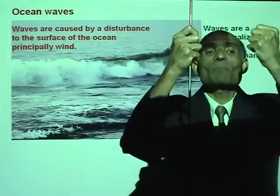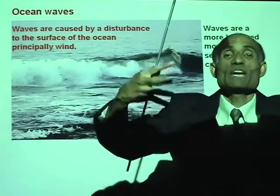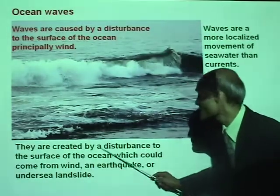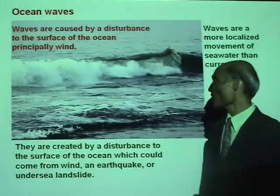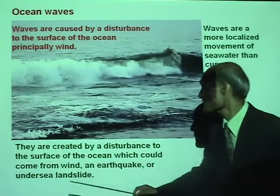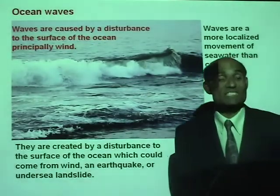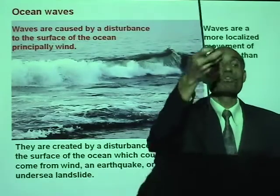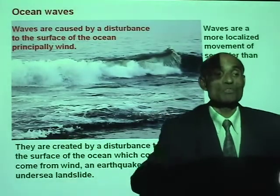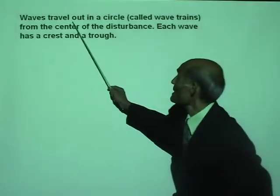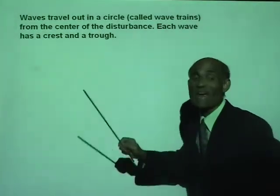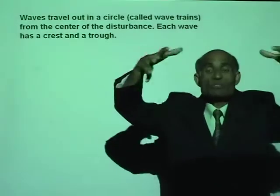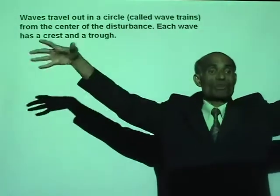A wave is simply a local action — the water moves up and down and the energy gets passed on through the surface of the sea. They are created by disturbance to the surface of the ocean, which could come from wind, earthquake, or undersea landslide. Any of these disturbances can create water to move up and down, creating ocean waves.